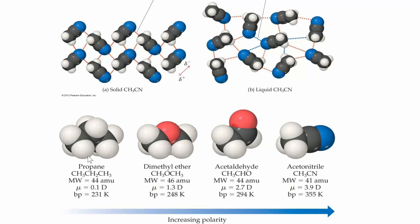This over here is propane — it's non-polar. It just has carbons and hydrogens; carbon-hydrogen bonds are generally going to be non-polar. Once you start adding some polar groups like a C double bond O or a C triple bond N, or anything where you have different electronegativities, the molecule becomes polar.